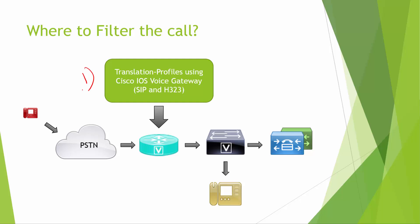The first method is using translation profiles in Cisco IOS voice gateway. This is a pretty old method and it works like a charm. We create translation rules and profiles similar to how we do digit manipulation in voice gateways. We match the ANI of the call, and once it matches the ANI, the call is blocked as soon as it's received on the gateway.